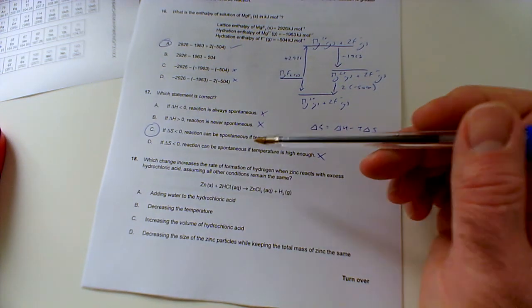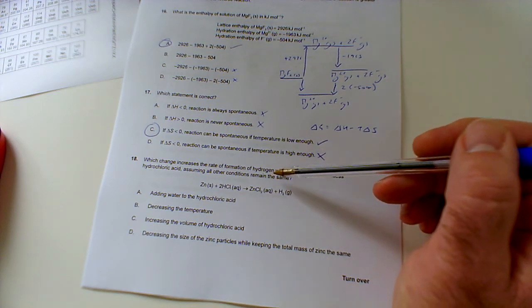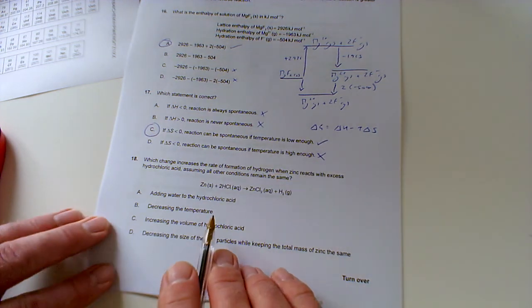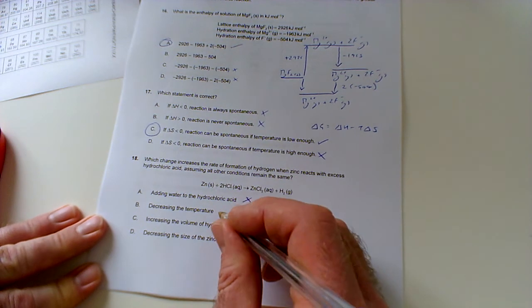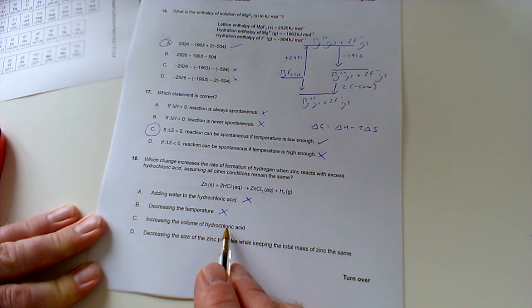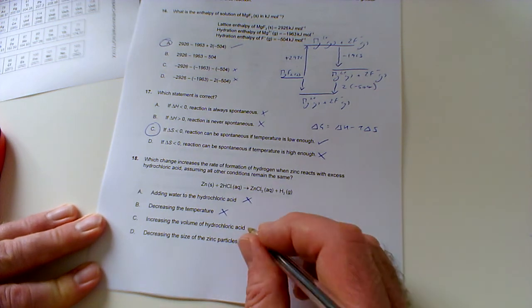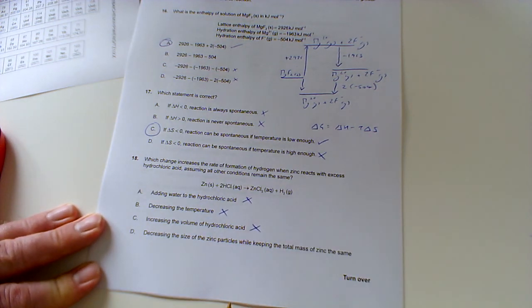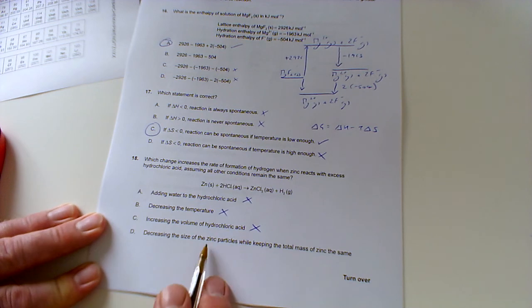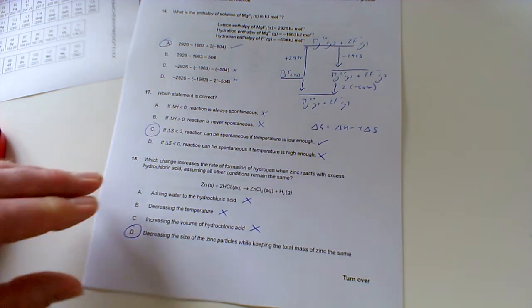Number 18: which change increases the rate of formation of hydrogen when zinc reacts with excess hydrochloric acid, assuming all other conditions remain the same? Adding water to the acid, well that's going to decrease its concentration and make it slower. Decreasing the temperature would make it slower. Increasing the volume, well that won't affect the rate, it won't even affect the amount of gas because it's in excess anyway. Decreasing the size of the zinc particles, well yeah that'll give it a larger surface area so you get a greater frequency of collisions. We're looking at D.